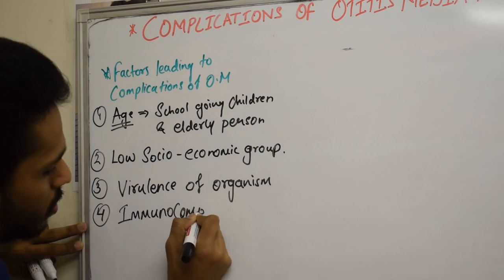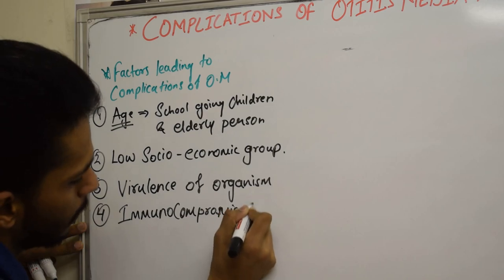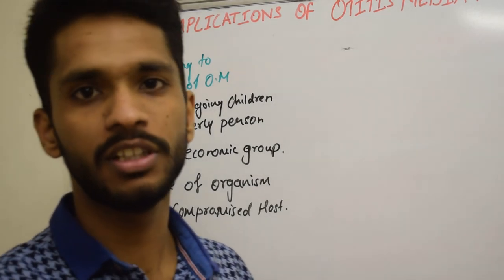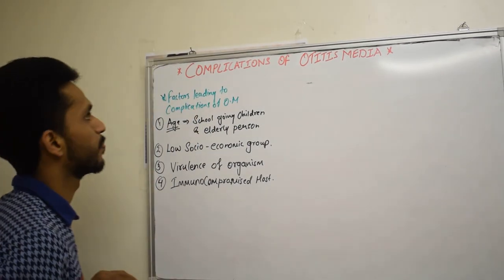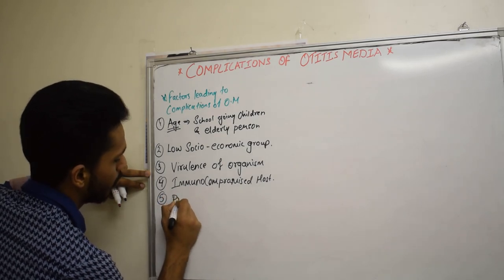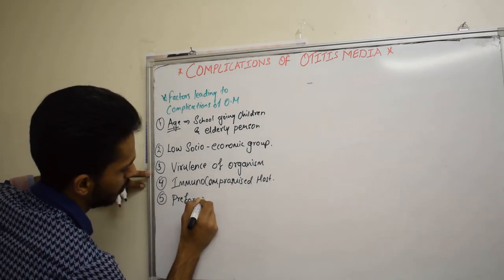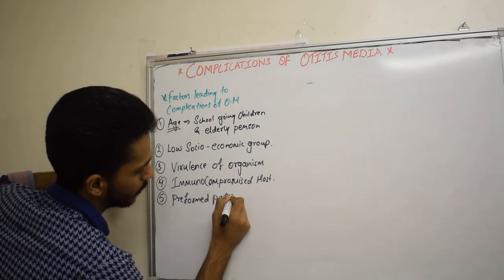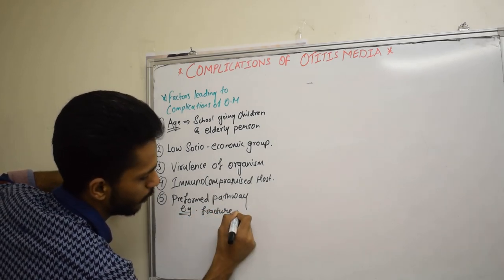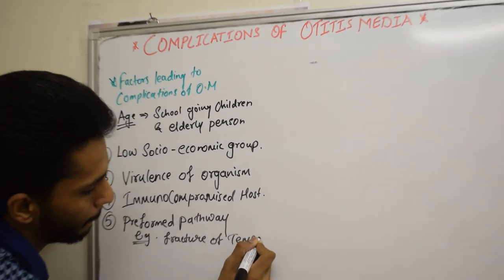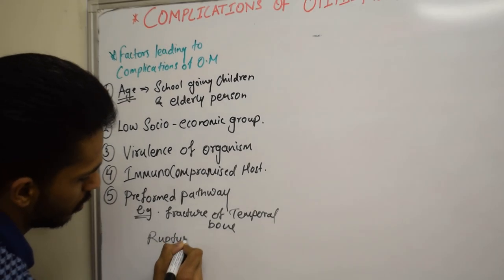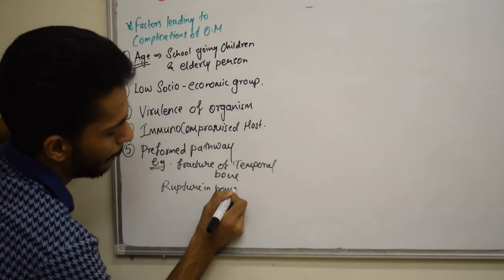The fourth factor is the immunocompromised patient. Patients with HIV, AIDS, or cancer receiving chemotherapy can more easily develop complications of otitis media. The fifth factor is preformed pathways — for example, fracture of the temporal bone, rupturing of the bony canal, or rupturing of the bony facial canal, which provide an easy route for infection to spread.